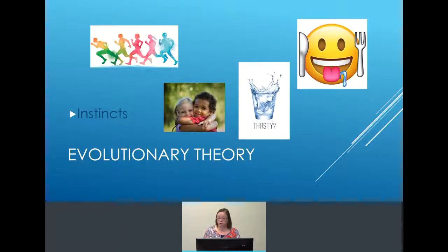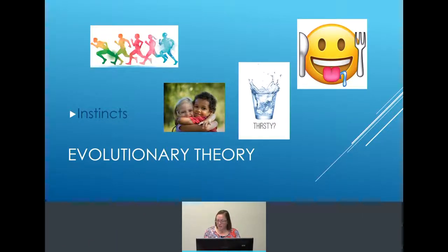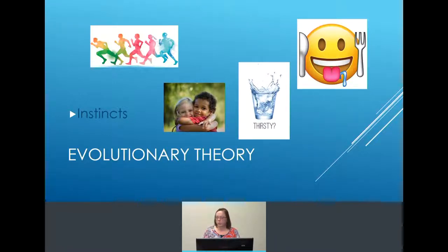The first theory is the evolutionary theory. This explains that we do what we do because of genetic programming — we do what we do because of instincts. For example, the picture on the top left where people are running: why do you run? You run to get away from danger, you run to get to safety. That would be an instinct.